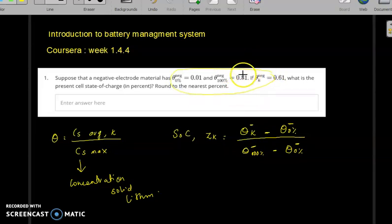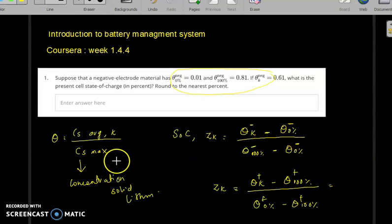Suppose the question is specifically about the stoichiometric ratio theta on the positive electrode. Then the formula changes and can be expressed as theta_k at the positive minus theta 100% at the positive electrode, divided by theta 0% at positive minus theta 100% at positive. You substitute all these values and you can find the exact state of charge of the battery.